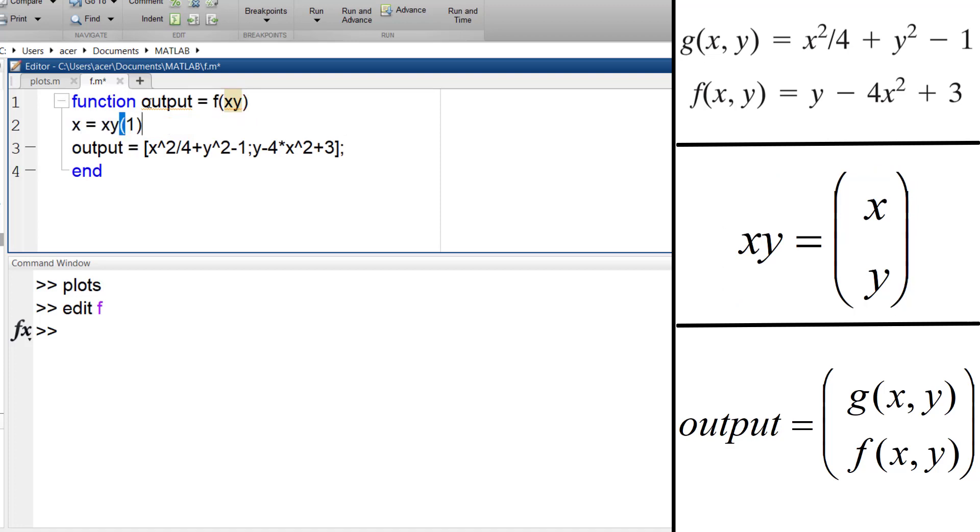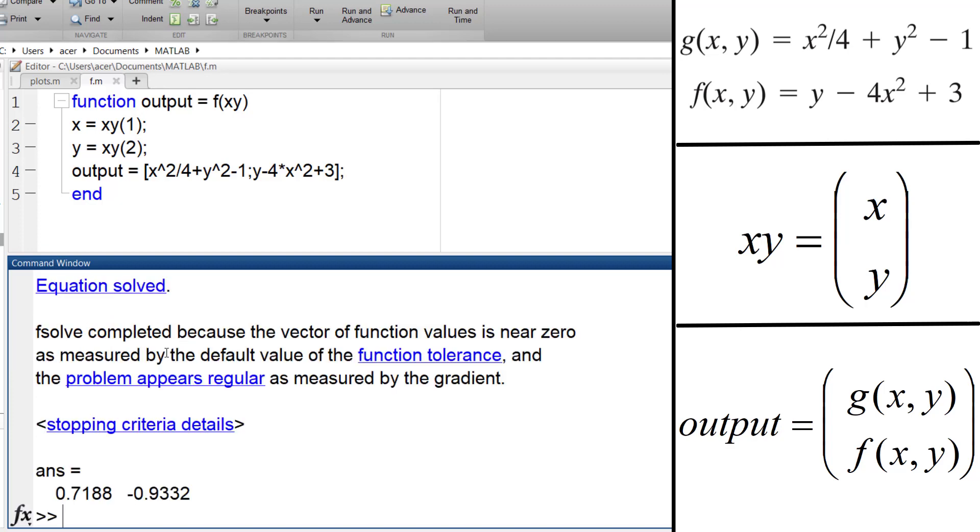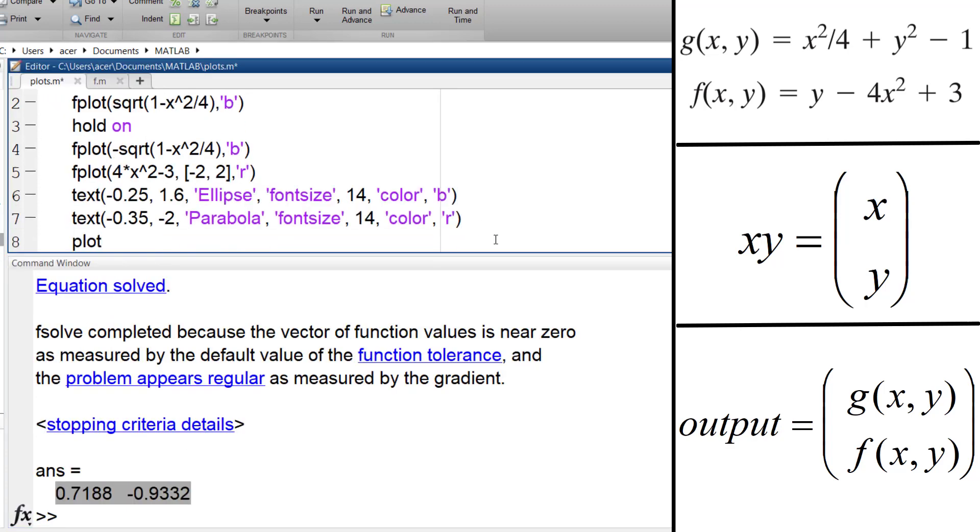Now I can use fsolve at sign f comma zero zero. I plot the answer. I can find the other answer by changing the initial guess.